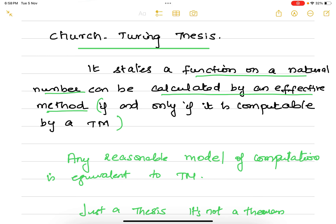If any computation, if we are able to perform - any function can be performed on a natural number, can be calculated by an effective algorithm if and only if it is computable by a Turing machine.